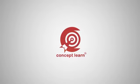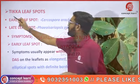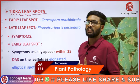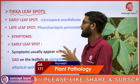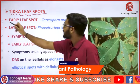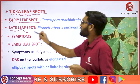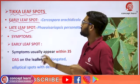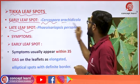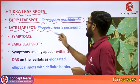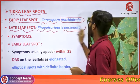Welcome to Concept Learn. The first disease is Tikka leafspot. Tikka leafspots are categorized into two types: early leafspot and late leafspot. Early leafspot is caused by Cercospora arachidicola. Late leafspot is caused by Phaeoisariopsis personata.